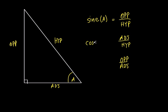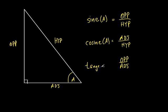This second ratio is called the cosine of angle A. Instead of saying 'take the ratio of the adjacent side to the hypotenuse,' you just say 'take the cosine of angle A.' That tells someone: take the adjacent side and divide it by the hypotenuse. They're kind of like code words. The third one is called the tangent — the tangent of A equals the opposite divided by the adjacent.